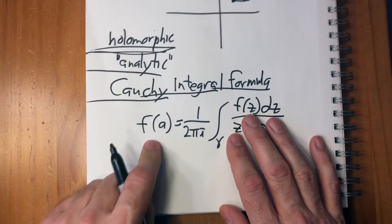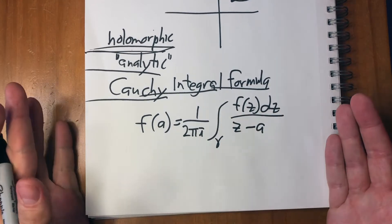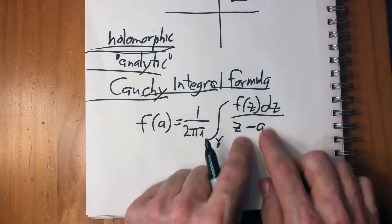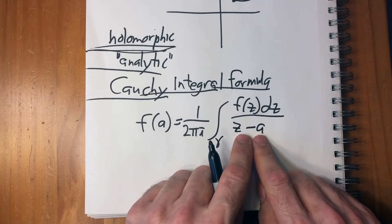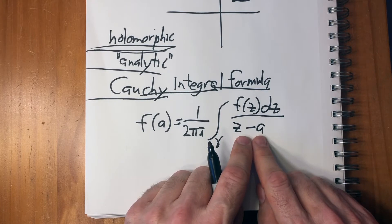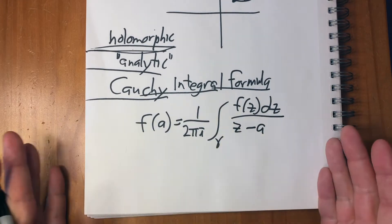F of z dz, f of a, one over two pi i, what is that? There's a gamma in there and it's all, it's a fraction. So what does that mean? And what is the whole thing trying to tell us?